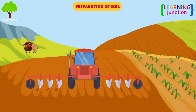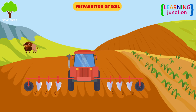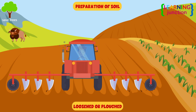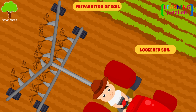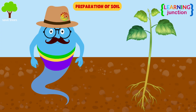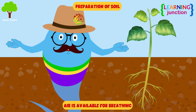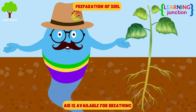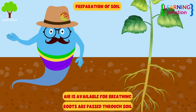Step 1: Preparation of soil. The agricultural land is loosened or plowed first. During plowing, the soil is loosened, which improves the aeration. Thus after plantation, air is available for breathing, and roots can easily pass through the soil.